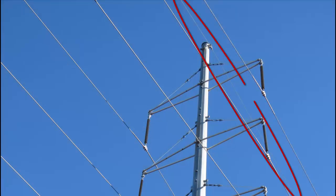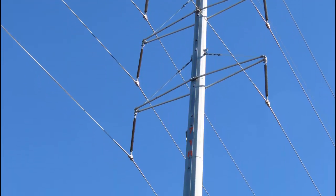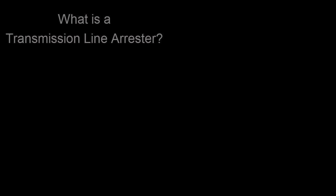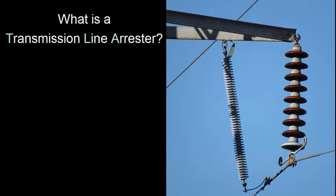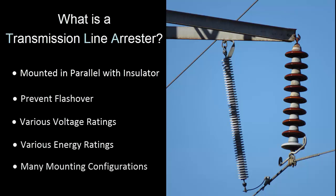Overhead shield wires had been the only cost-effective means of mitigating the effects of lightning until that moment. Since then, the TLA has shown its value not only in reducing lightning induced outages, but also in numerous ways which we will discuss here. A TLA is an arrestor mounted in parallel with a transmission insulator to prevent flashover of the insulator during various transient events. They come in various voltage ratings, energy ratings, and many mounting configurations.